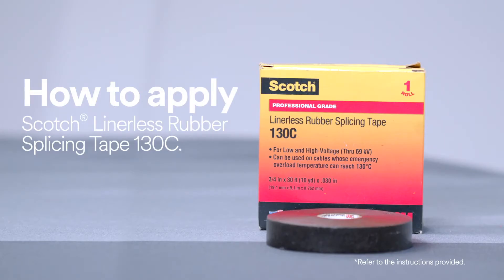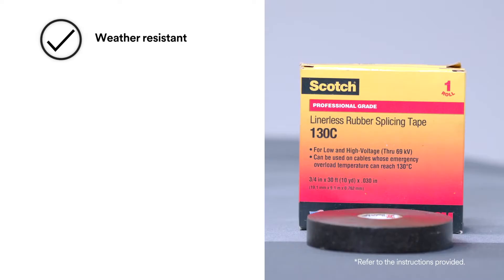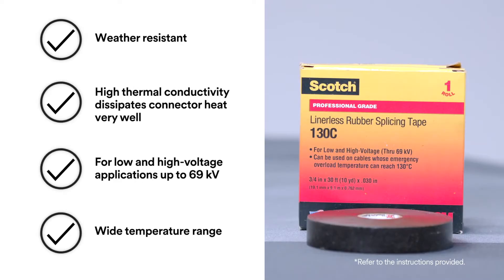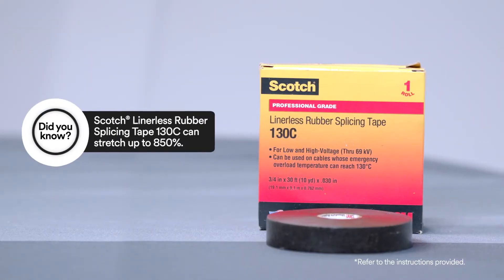To help protect an inline connector splice, use Scotch Linerless Rubber Splicing Tape 130C because it provides electrical insulation, environmental sealing, and mechanical protection or for building up primary insulation up to 69 kilovolts.